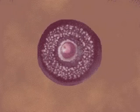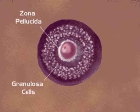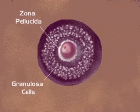The secondary follicle contains many more granulosa cells and an accumulation of follicular fluid that is secreted by granulosa cells. This fluid coalesces in the follicle to form the antrum.